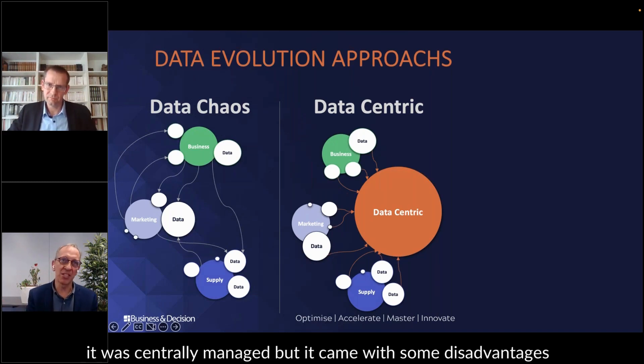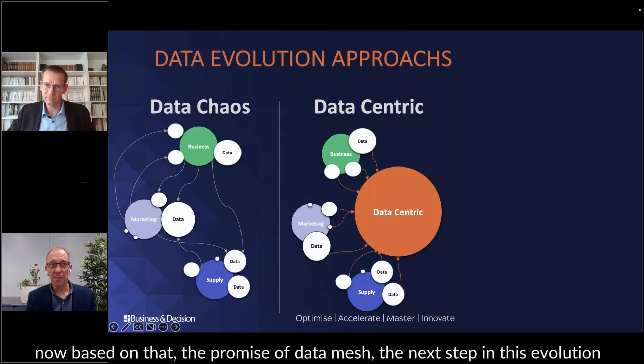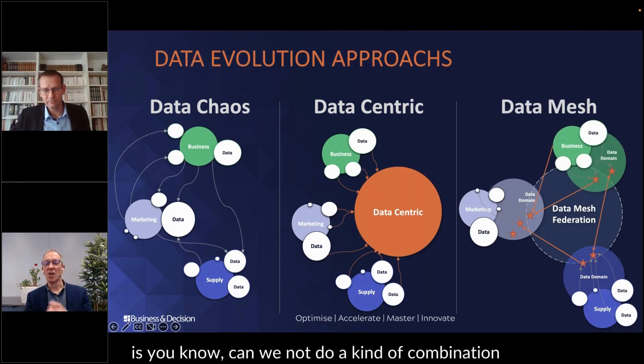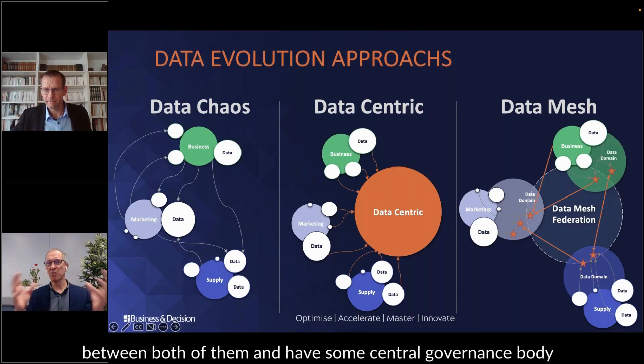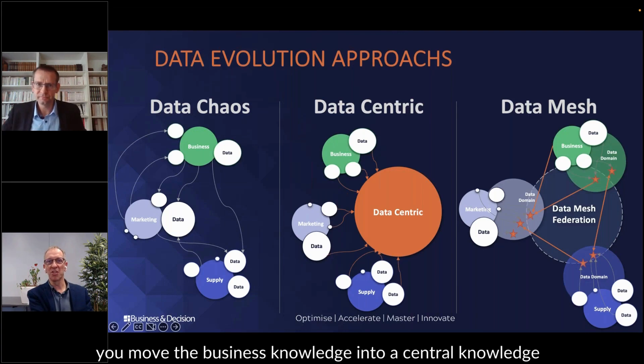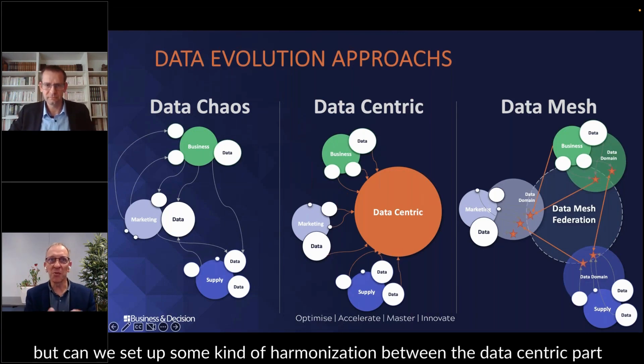Now based on that, the promise of data mesh, the next step in this evolution is, can we not do a kind of combination between both of them and have some central governance body, which is not a bad thing to do because obviously you need governance, but can we set up some kind of harmonization between the data centric parts and let's call it the data chaos part from before?